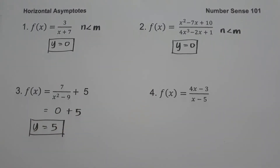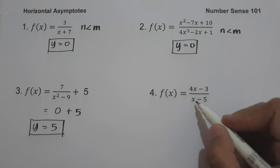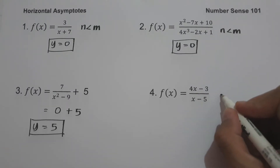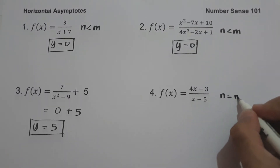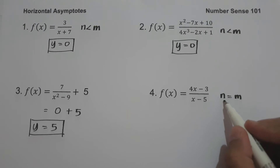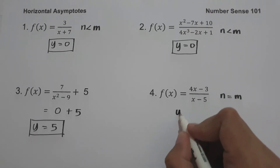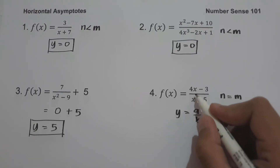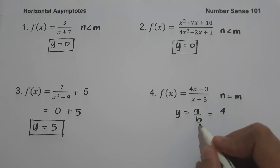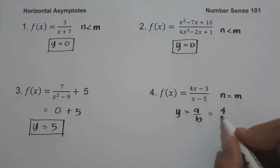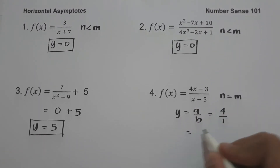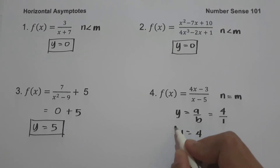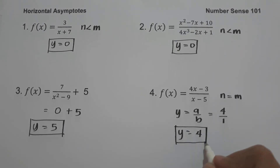On number four, we have f(x) equals 4x minus 3, all over x minus 5. Since the degree of the numerator is equal to the degree of the denominator, we have n equals m. Our horizontal asymptote is y equals a over b. Here, a is the leading coefficient of the numerator, which is 4, and b is the leading coefficient of the denominator, which is 1. So 4 divided by 1 equals 4, and our horizontal asymptote is y equals 4.